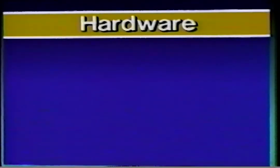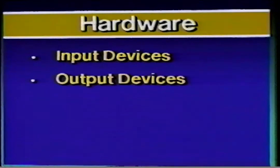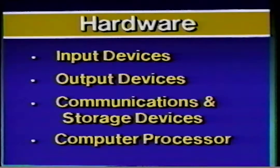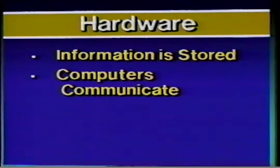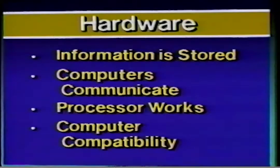This course is divided into four lessons: input devices, output devices, communication and storage devices, and the computer processor. Through these lessons, you will learn how information is stored, how computers communicate with each other, how the computer's processor works, and what computer compatibility is. When we are done, you will have a solid understanding of hardware, and as a result, will be more computer literate.